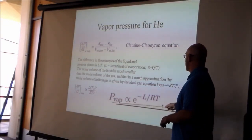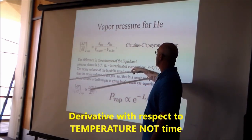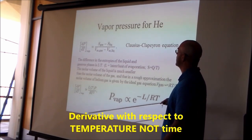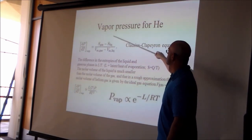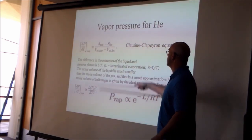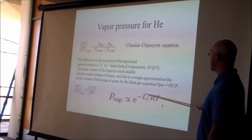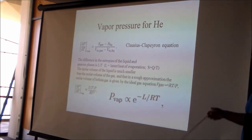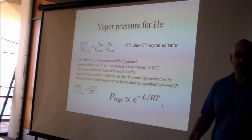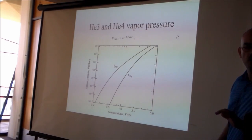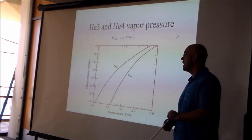Here is the Clausius-Clapeyron equation: dP/dT = (S_gas − S_liquid) / (V_gas − V_molar_liquid) = L/T. The key result is that vapor pressure goes as e^(−L/RT), dropping exponentially at low temperature. For helium-3 and helium-4, at a given temperature, helium-3 always has a higher vapor pressure than helium-4, because it has a larger latent heat and lower mass.